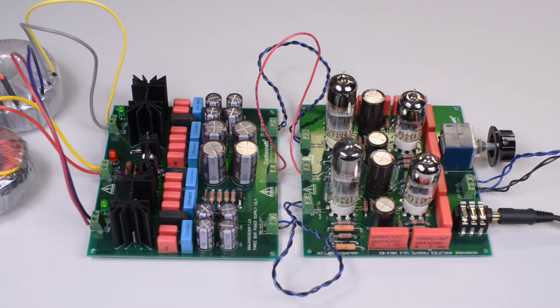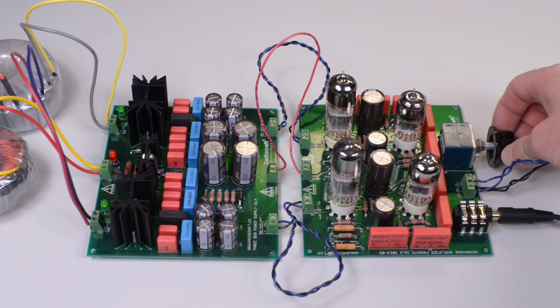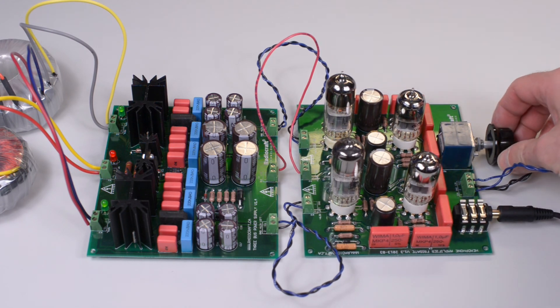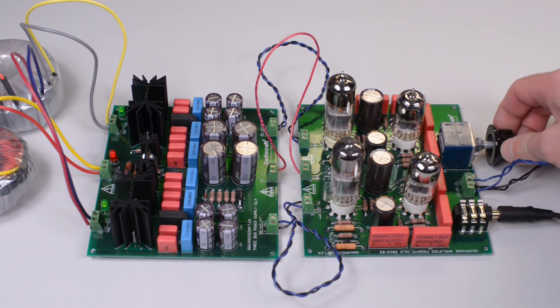This is the maximum volume which this headphone amplifier delivers through Sennheiser 650 with impedance of 600 ohms. This is the minimum volume and the maximum volume again.